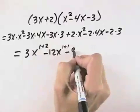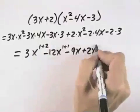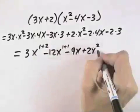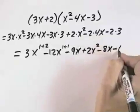Minus 3 times 3 is minus 9x. Here we have plus 2x squared, a negative 2 times 4 is minus 8x. And finally, negative 2 times 3 is minus 6.